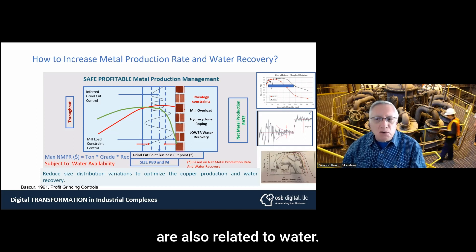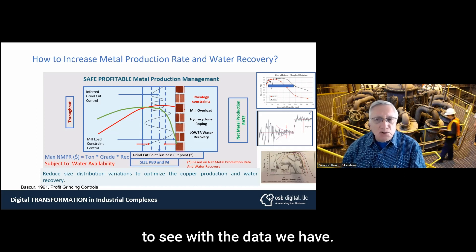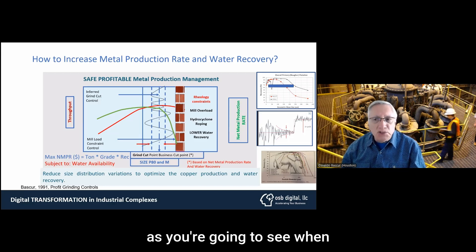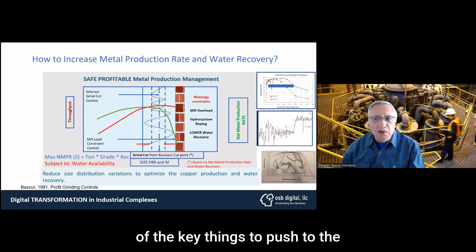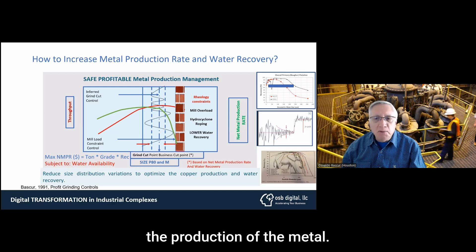These constraints are also related to water. You want to maximize the net metal production rate, but it depends on the amount of water. So when you are producing this variable particle size, you lose a lot of water and have problems with overflow of the mill, hydrocyclone dropout, and you cannot recover the water. The water changes drastically when you have fines specifically. So the way we are grinding is one of the key things to push to the constraint so we can maximize the copper production and the water necessary to maximize production of the metal.